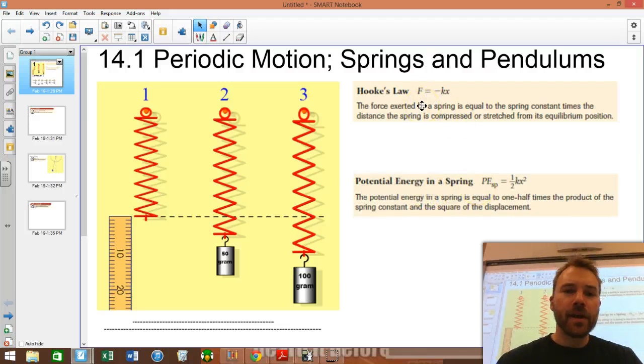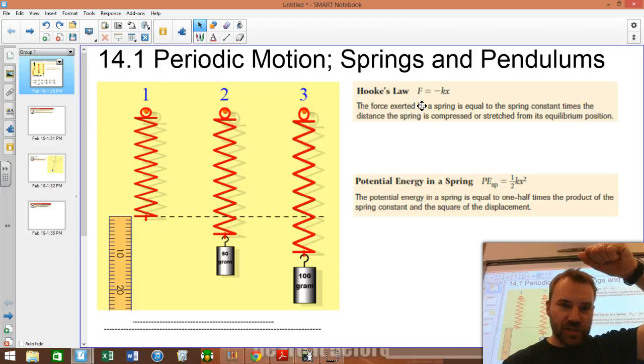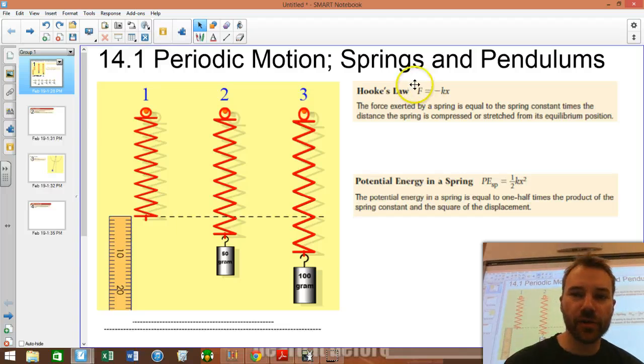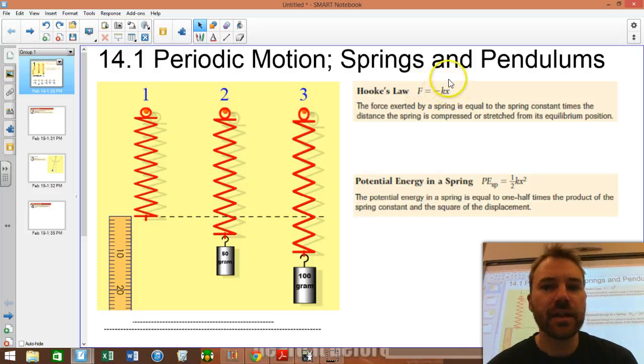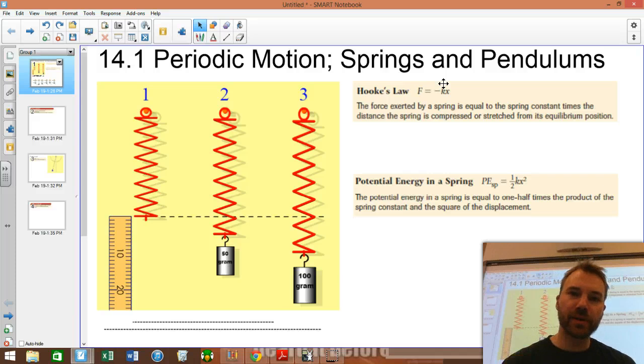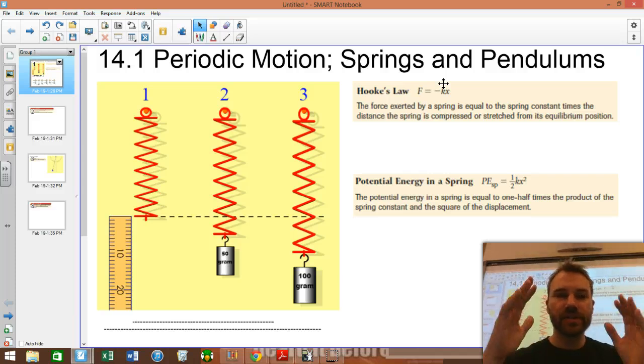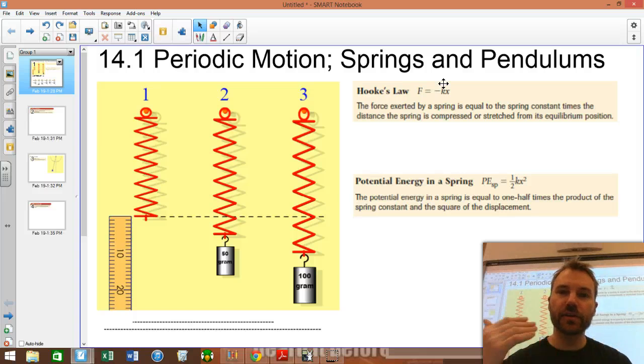Hooke's Law states that the more you stretch a spring, the more force, and it's a linear relationship, that force is equal to some constant k times x, the distance. K stands for what's called the spring constant. The bigger the number k, the stiffer the spring is. If you have a very large spring constant, it's a really stiff spring that's hard, really slow.